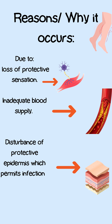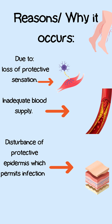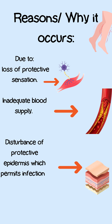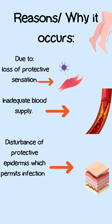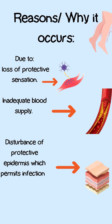Reasons why it occurs: loss of protective sensation in the nervous system, inadequate blood supply, and disturbance of the protective epidermis which permits infection, particularly in the presence of hyperglycemia.